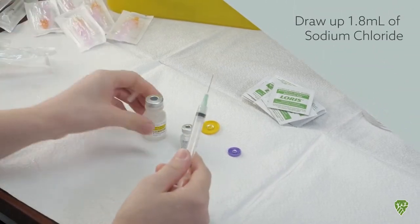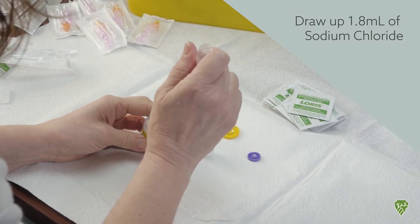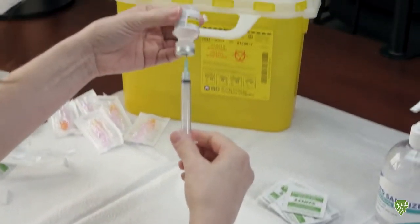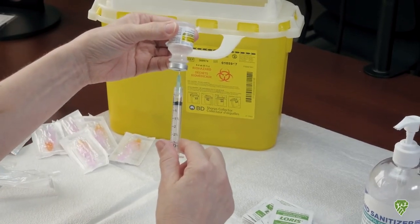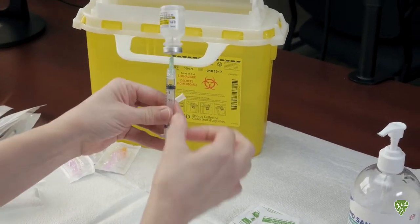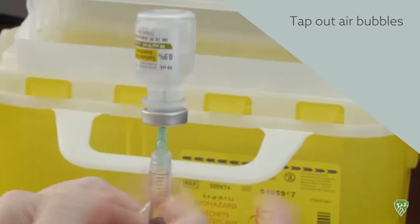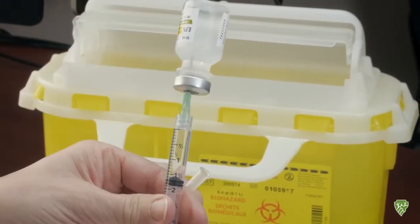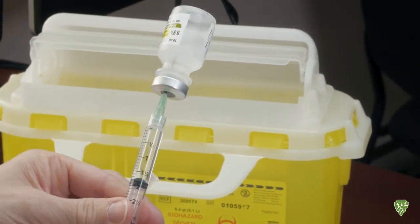Okay, so now I want to draw up 1.8 milliliters of the sodium chloride. And you want to tap out any air bubbles and just make sure all of the air bubbles are out, bringing it down to exactly 1.8.